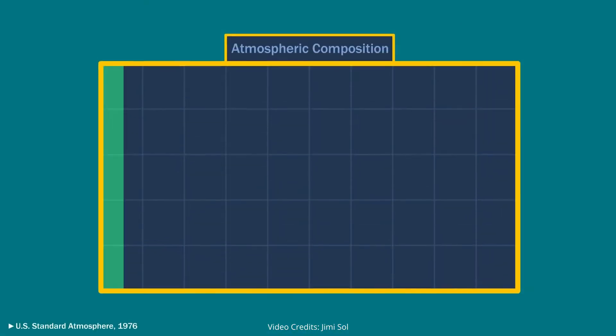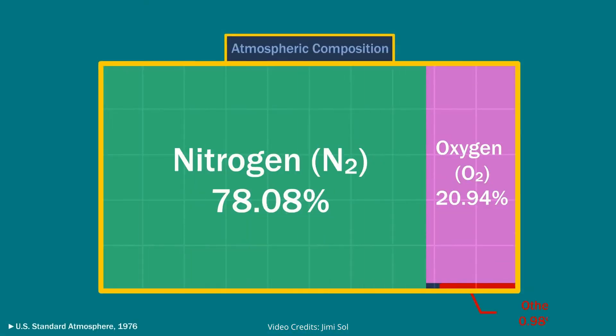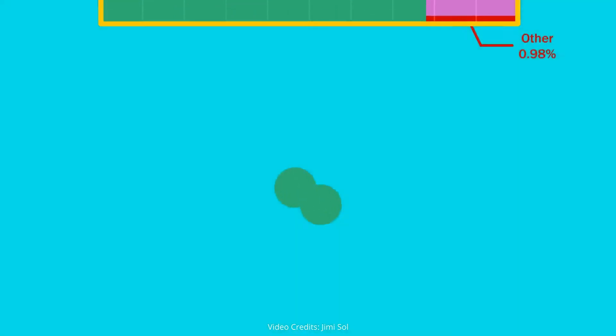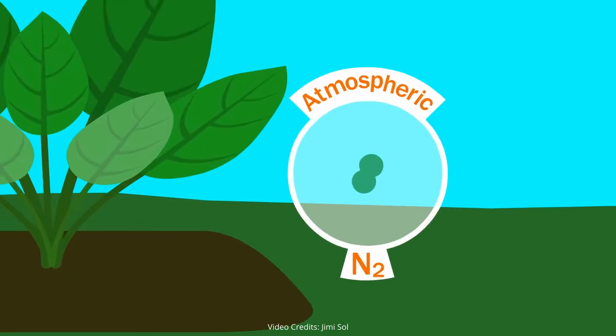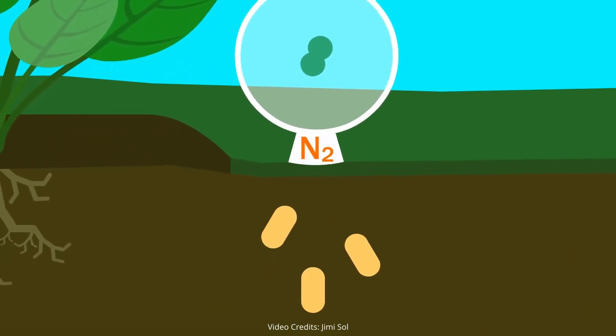Nitrogen makes up 78% of the Earth's atmosphere by volume. But most of this nitrogen takes the form of two nitrogen atoms strongly bonded together, which isn't very reactive and is useless to plants. For it to become plant available, we need the help of bacteria.